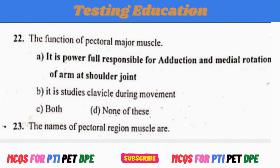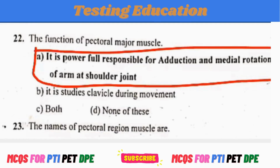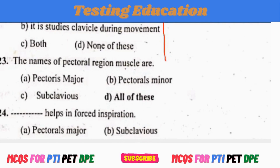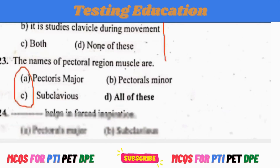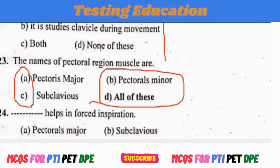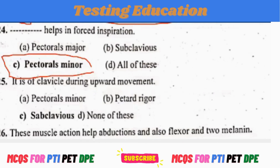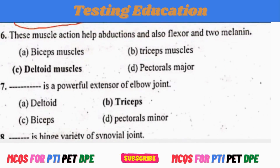The name of the pectoral region muscles are pectoralis major, pectoralis minor, and subclavius. Pectoralis major is a big muscle of the clavicle. During upward movement, subclavius assists. These muscles help in abduction, flexion, and medial rotation. The deltoid muscles also assist in these actions.